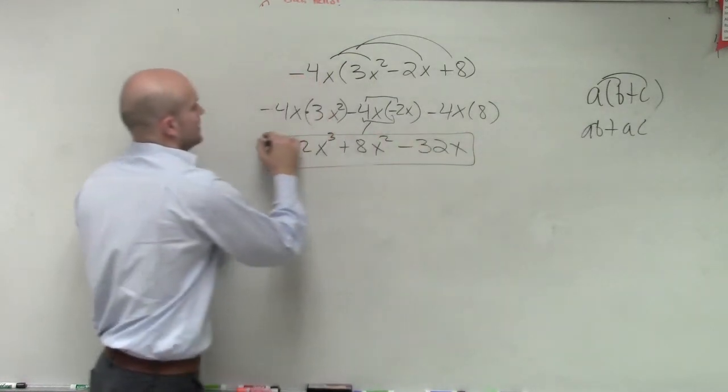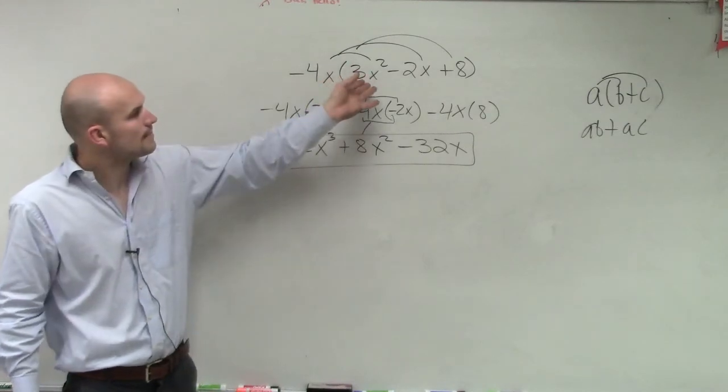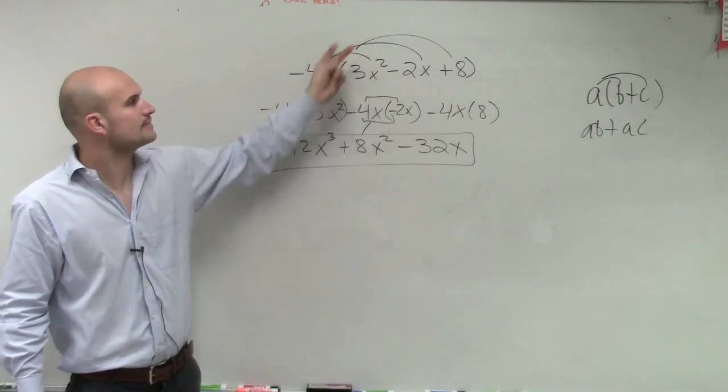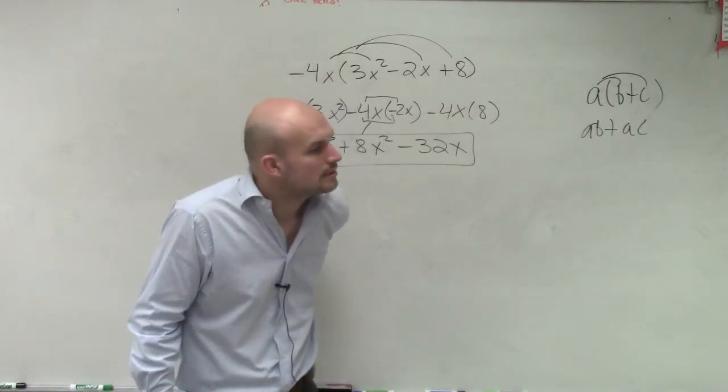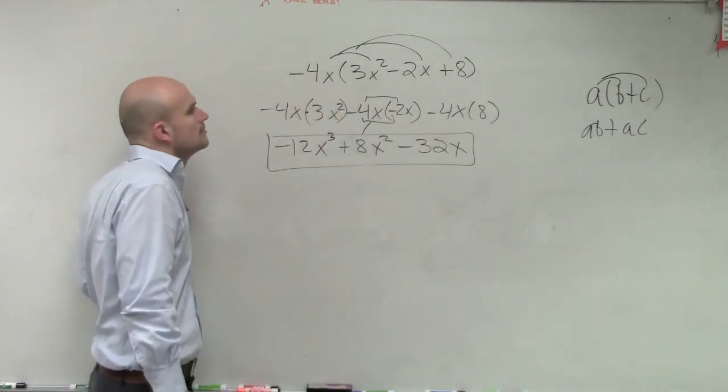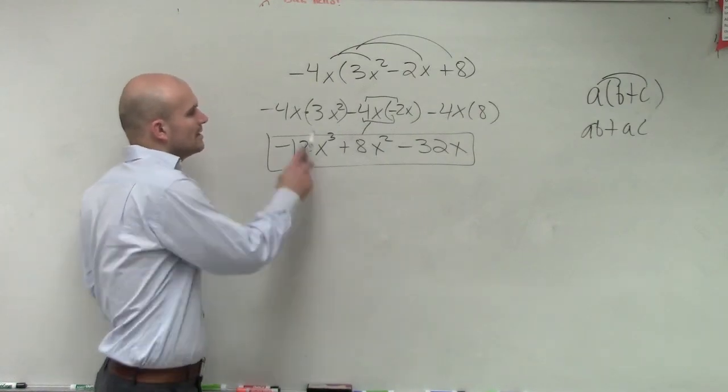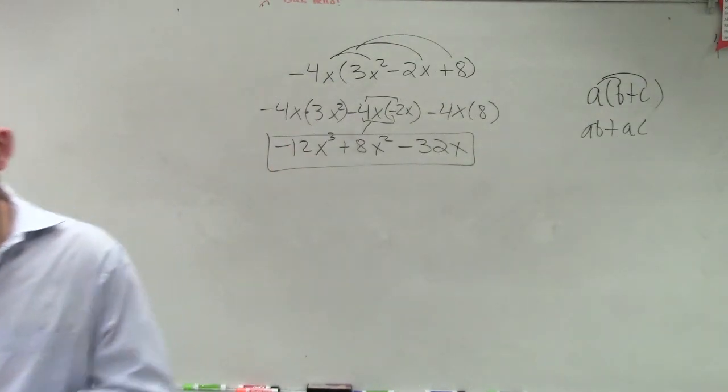OK, I have a question. Yep. So you multiply negative 4x times negative 2x. 8 and 3x squared. You just multiplied it outside, but why did the 12x not turn into 12x to the 4th instead of 3? The other one turned into 8x squared. Right. This one did. It is x cubed. x times x squared is x cubed. Sorry.